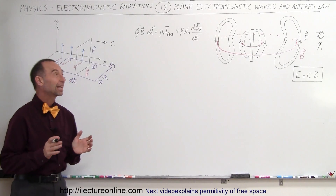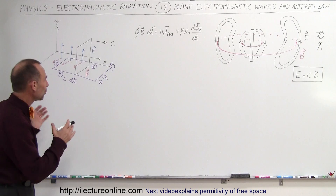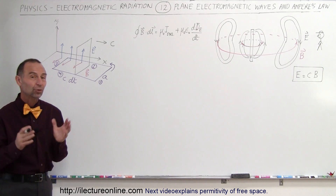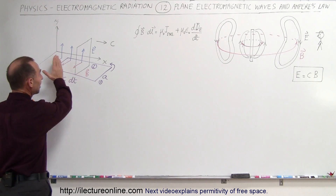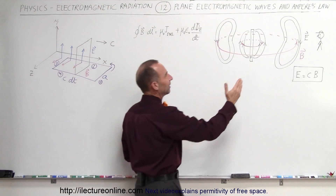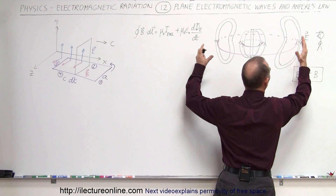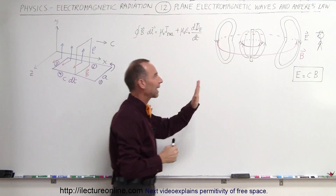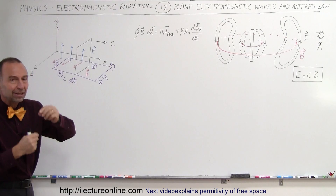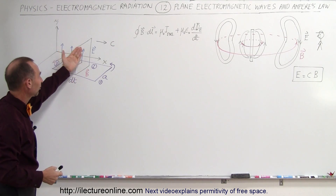Welcome to ElectronLine. We're going to take a look at Ampere's Law and how it gives us more information about electromagnetic radiation. What we have here is a plane wave — this is the front of an expanding electromagnetic radiation wave coming at the observer. If it's far enough away from the dipole antenna, it looks like a flat plane wave, which is what we have over here.